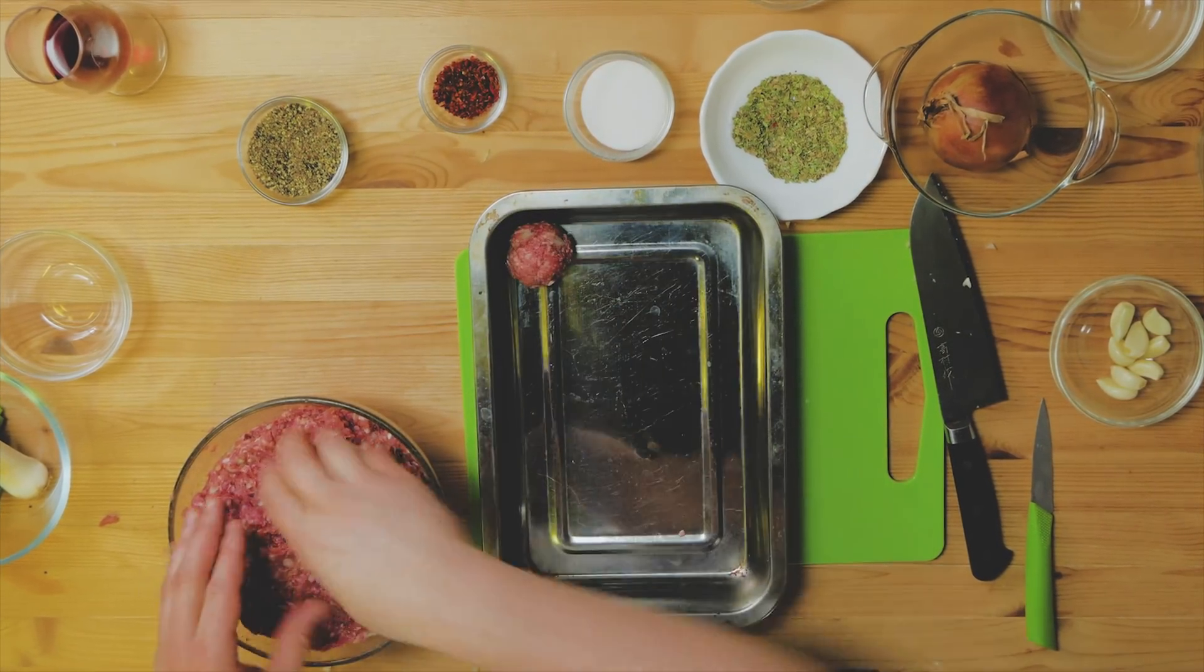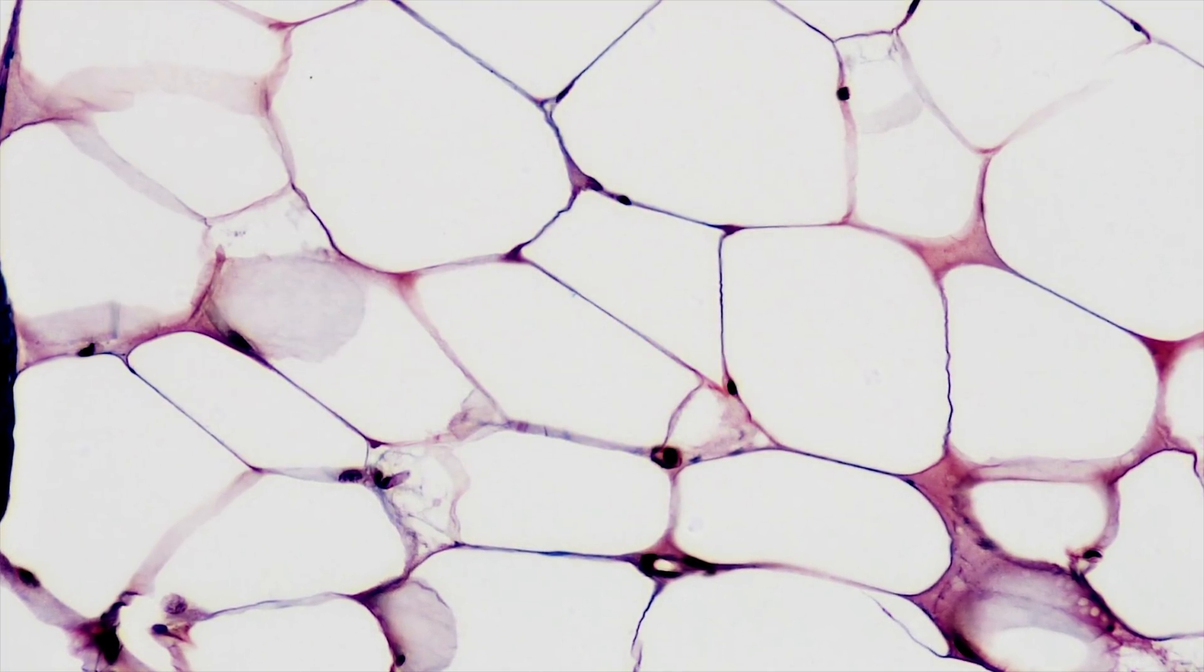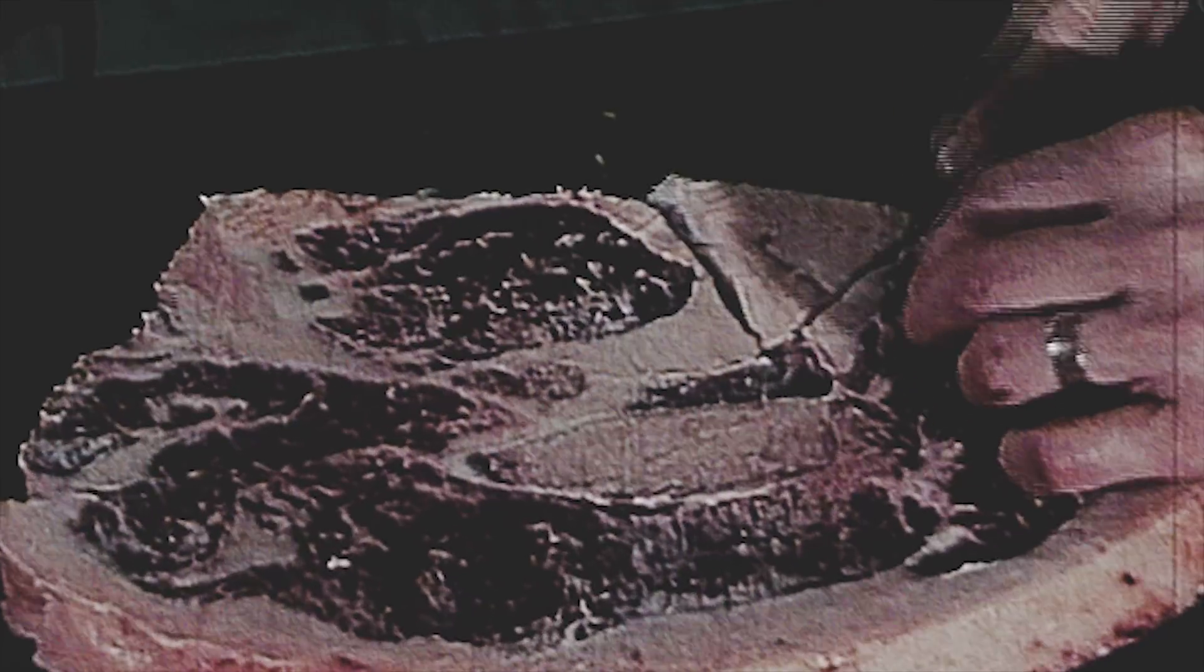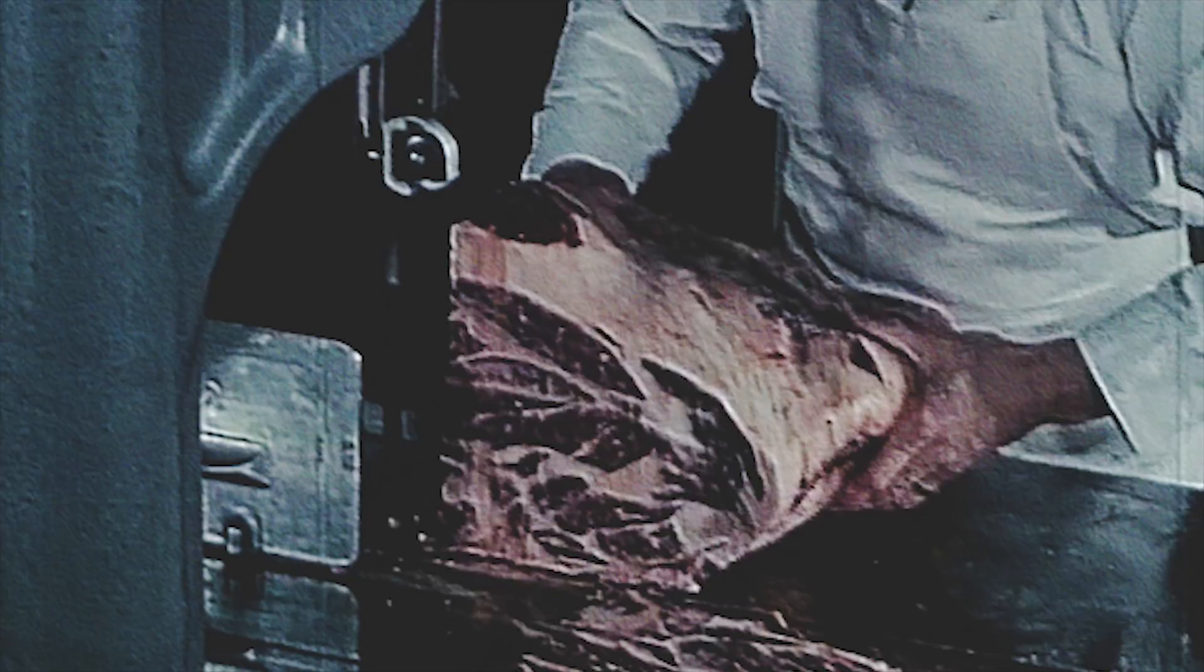A lot of research is directed towards perfecting the taste by growing fat cells with the muscle cells and finding ways to stimulate the cells to produce lots of protein. But the taste of meat is determined by around a thousand different chemicals and part of the taste comes from what happens to the meat when butchered.